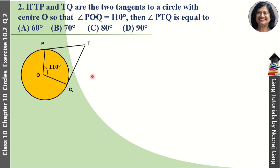Here we have a diagram given. We have angle POQ given. This angle is 110 degrees. And what do we need to find? We need to find this angle PTQ.